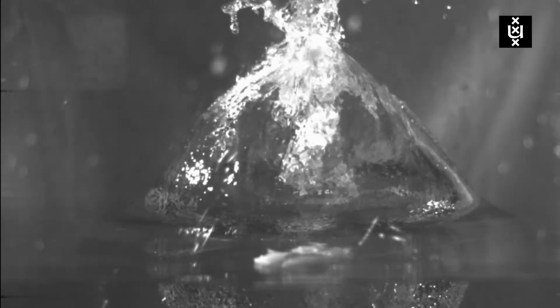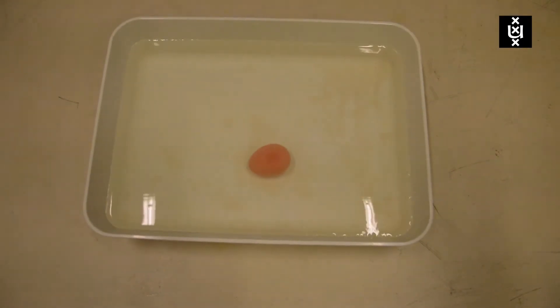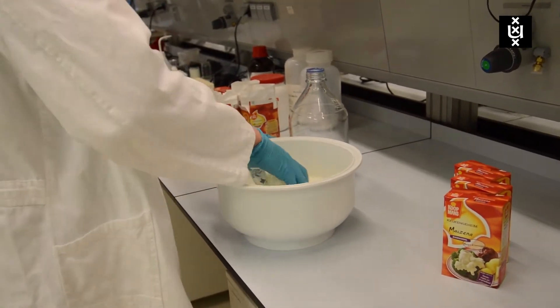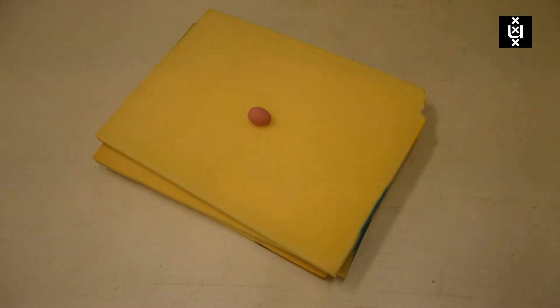We can for instance use different samples which could save the egg from breaking. First of all water, a normal fluid, but perhaps cornstarch with water, a shear thickening fluid, borax, a viscoelastic fluid, and as a control, elastic foam.